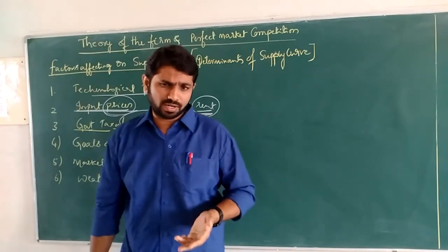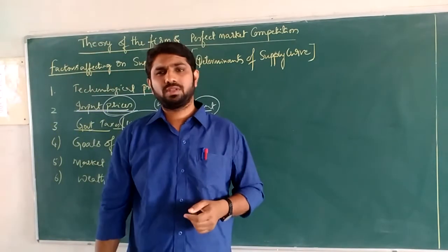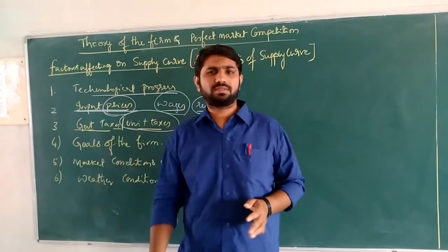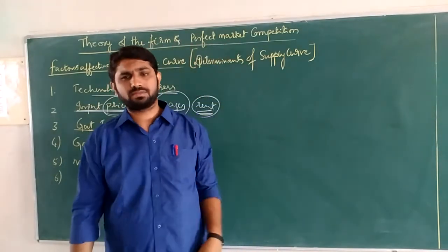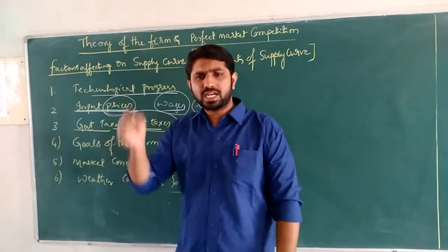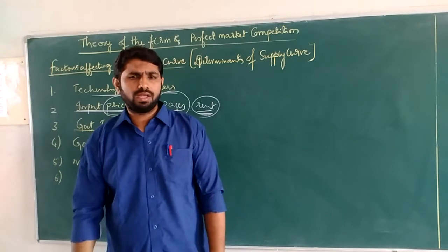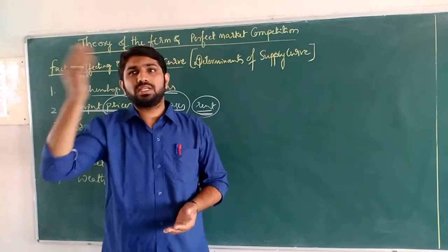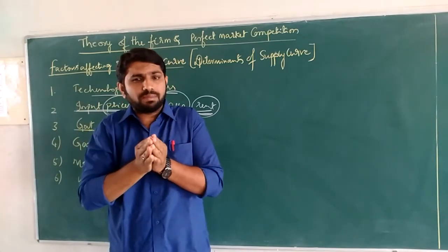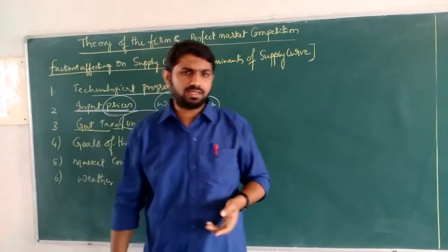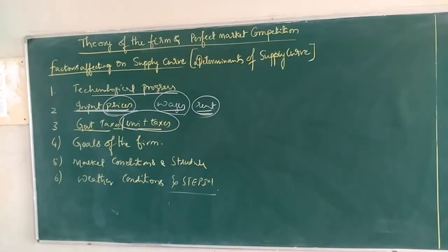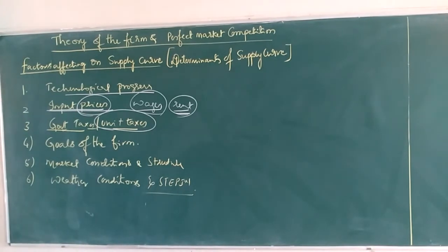Whatever charges are levied by the government on the selling of a commodity by different firms in the market — if tax increases on the price of a commodity, then only the cost increases, the profit portion decreases, and the supplier will take a leftward shift on the supply curve. To understand this graphically, we need to see how government tax or unit taxes affect the quantity of supply.